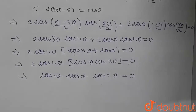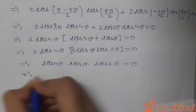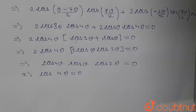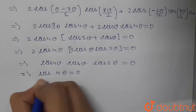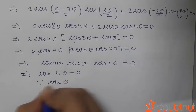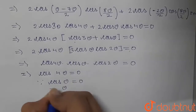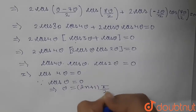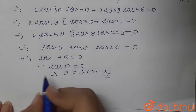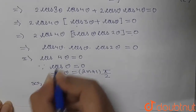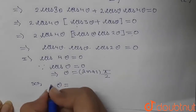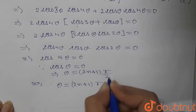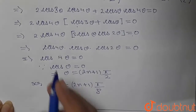Now we equate each factor to zero one by one. For the first case: cos 4θ = 0. Since cos θ = 0 implies θ = (2n+1)·π/2, when cos 4θ = 0, we get 4θ = (2n+1)·π/2, so θ = (2n+1)·π/8. This is the answer for cos 4θ = 0.